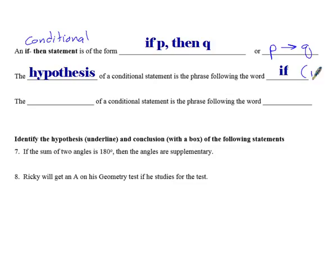And so what we're saying here is that the hypothesis of a conditional statement is always followed by the word if. And most of the time, that's our P statement. The conclusion is the conditional statement or phrase that follows the word then. And that's typically our Q.